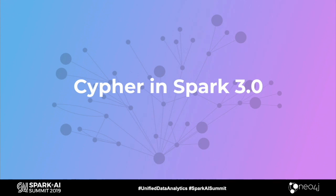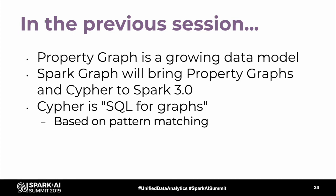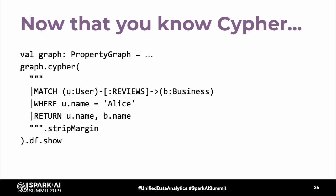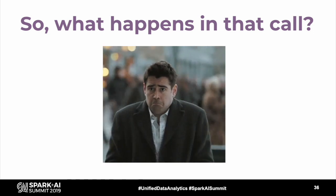Welcome back to the continuation of Graph Features in Spark 3.0. In the first 40 minutes we covered: property graphs as a growing data model; Spark Graph as a new module bringing property graphs into Apache Spark; and Cypher as a property graph query language based around pattern matching. Now that you know Cypher, here's what happens when you call graph.cypher() with a Cypher query string.